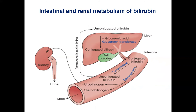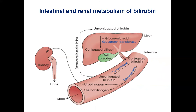Conjugated bilirubin is reduced to urobilinogen by specific bacterial enzymes, beta-glucuronidase. Urobilinogen then either passes into the feces as the bile pigment stercobilinogen, or is taken up by the kidney and oxidized to urobilin and excreted into urine.